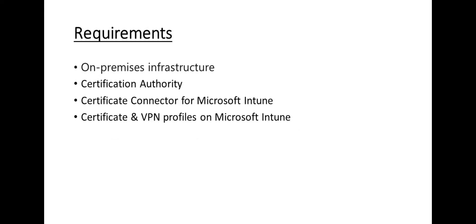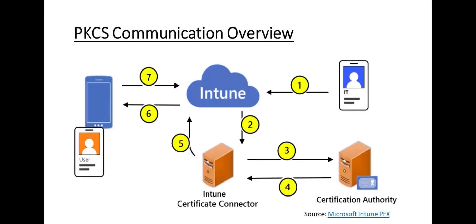In the Requirements section, these are the things we must have to create the certificate authentication setup. The first thing is on-premises infrastructure — a certificate authority to issue the root certificate and also the client certificates. Regarding the certificate connector and the certificate and VPN profiles, we are going to talk about those later in this video.